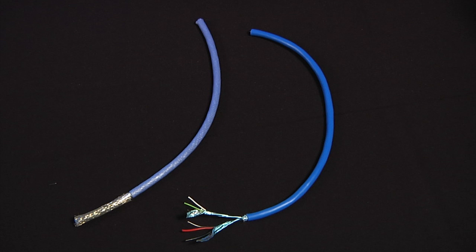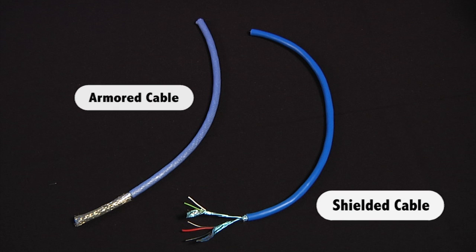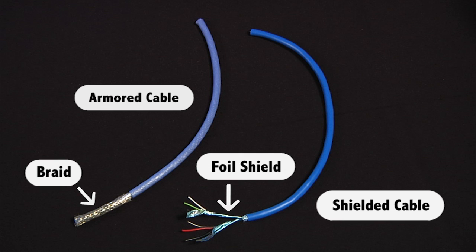When assembling cable glands for Micromotion devices, you must use either shielded cable or armored cable with a cable gland. Unshielded cable has to be run inside a shielded conduit. Shielded cable is surrounded by a foil shield. An armored cable is surrounded by a braid. In either case, the important thing to remember is that the foil or the braid should be terminated inside the gland and not inside the wiring compartment.